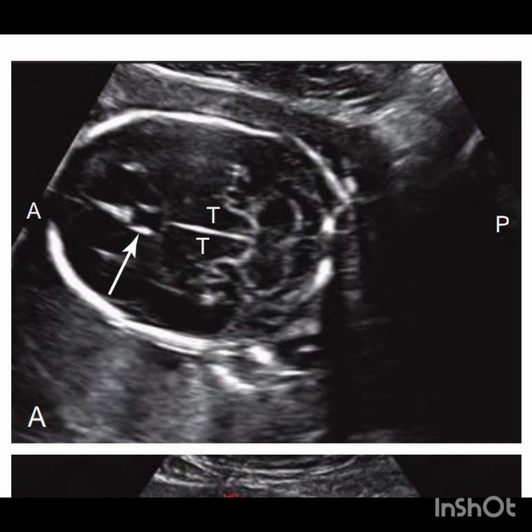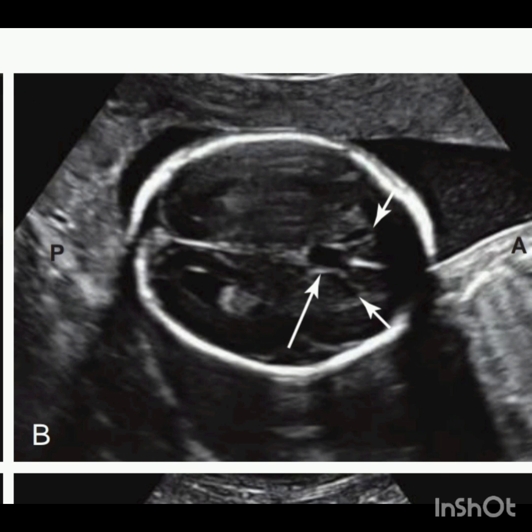Now let's talk about the cavum septum pellucidum. As you can see in this picture indicated by the arrow, it is an anechoic rectangular box-like structure, anterior to the thalami which is indicated by the letter T. In this image again we have the cavum septum pellucidum between the frontal horns of the lateral ventricles, indicated by the short arrow.